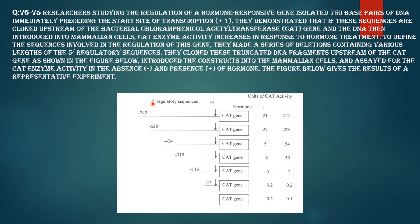Some base pairs of DNA immediately preceding the start site of transcription. They demonstrated that if these sequences cloned upstream of the bacterial chloramphenicol acetyltransferase (CAT) gene, the DNA is then introduced into mammalian cells. CAT enzyme activity increases in response to hormone treatment.